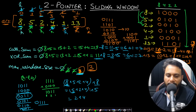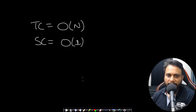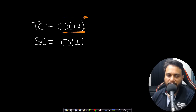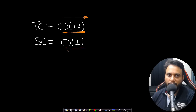The time complexity is O(N) since we traverse the array once, with each element visited at most twice using the left and right pointers. The space complexity is O(1).